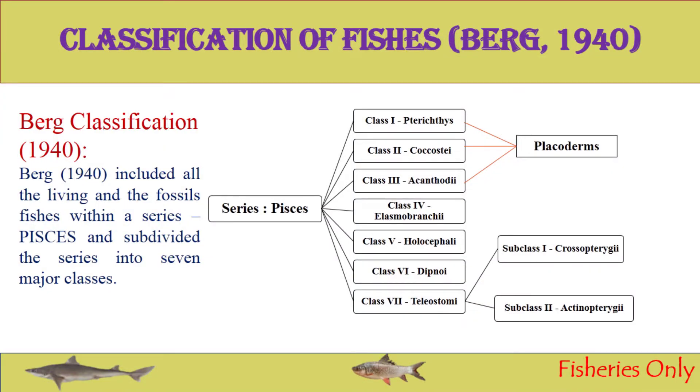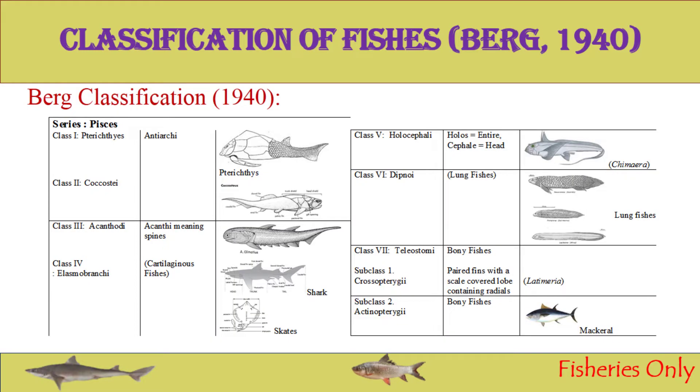The seventh class is Teleostomi, the bony fishes, whose endoskeleton is ossified. This class is further divided into Crossopterygii and Actinopterygii. Crossopterygii are bony fishes having paired fins with scale-covered lobes containing radials. Actinopterygii are fishes where the lobes are not present or radials are not fleshy — the ray-finned fishes.